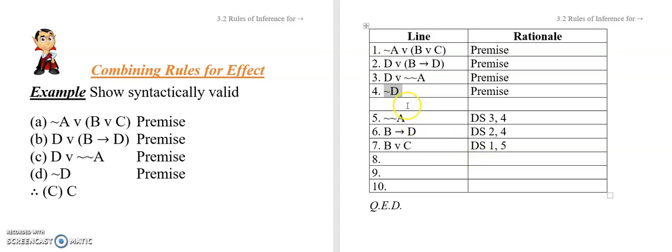Okay, so four and six are going to combine via modus tollens. So four and six combine via modus tollens. What does that yield? Well, it yields not B in this particular case, which is pretty interesting.